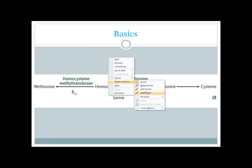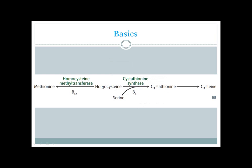Homocystinuria is a disease, or a spectrum of diseases, that occurs when there is an increased level of homocysteine in the blood. Normally, homocysteine is metabolized by two important enzymes: cystathionine synthase, which helps conversion of homocysteine to cysteine, and homocysteine methyltransferase, which helps the conversion of homocysteine to methionine.